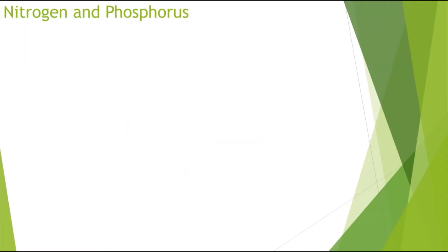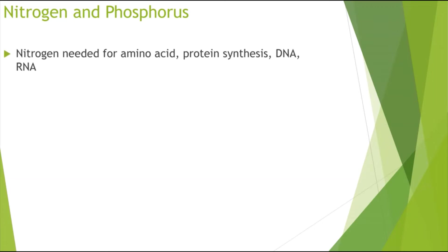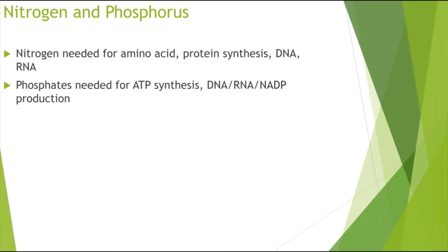So let's begin. First, looking at why we need nitrogen and phosphorus. Nitrogen is needed for amino acids, protein synthesis, and also DNA and RNA. Phosphorus is also needed for ATP synthesis, DNA, RNA, and NADP production, and it's also involved in the phospholipid bilayer.